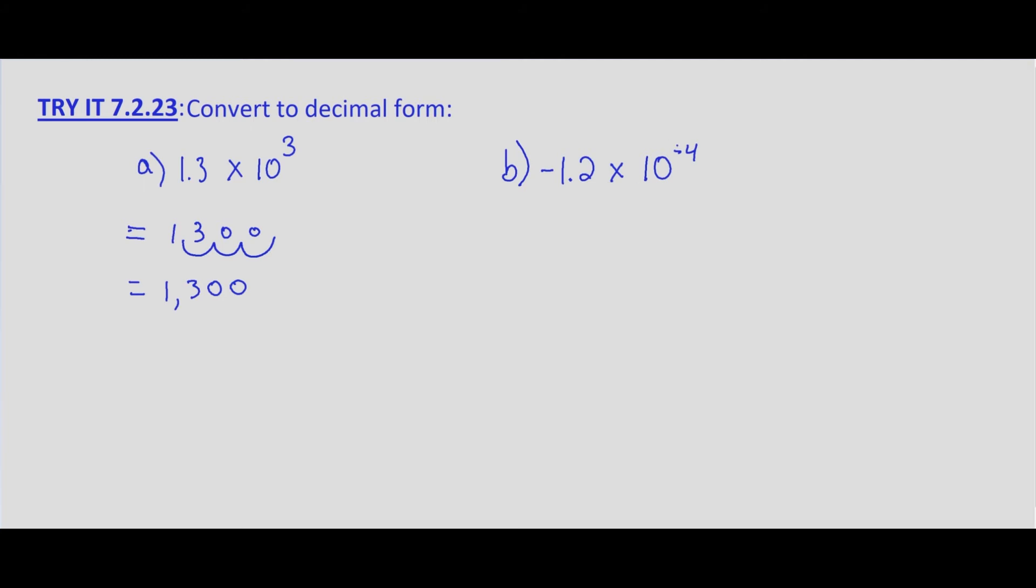So we've got negative 1.2. And I'm going to leave the negative way off to the side because I know that we're going to have to move the decimal to the left. So I'm going to put the negative out here as a reminder. And then I'm going to put the 1.2 here. And we want to move the decimal place four places to the left because it's negative 4.